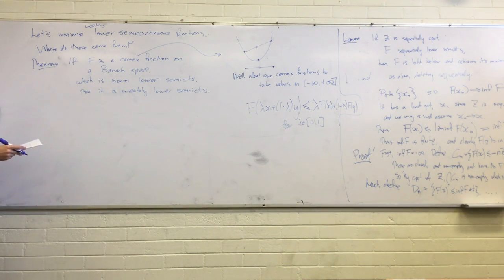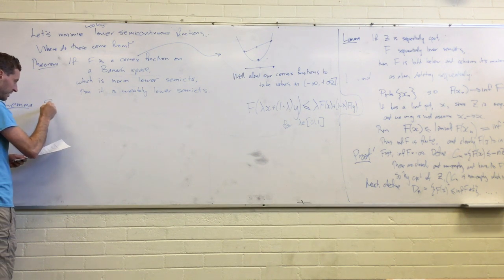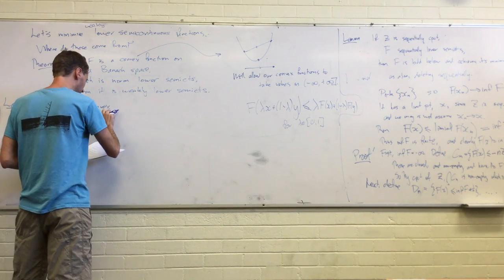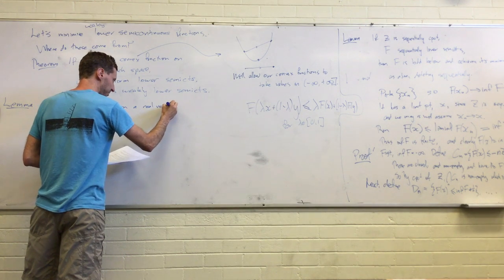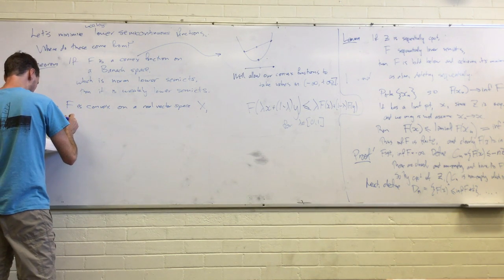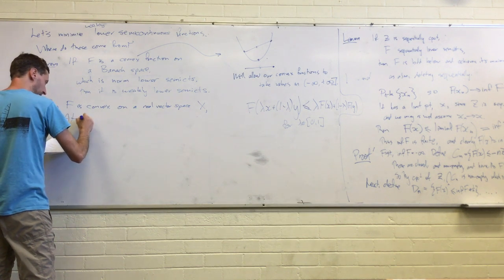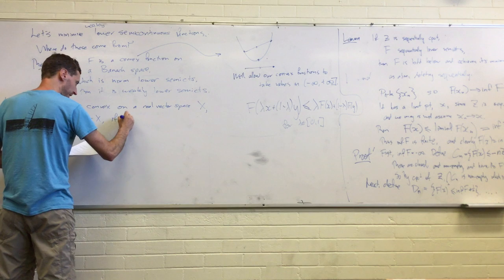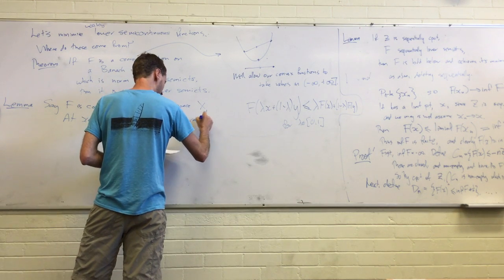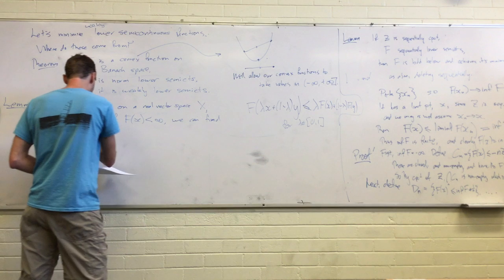Okay. So, this theorem needs a few lemmas to make it work. So, first of all, I think we're not going to prove it because it's so similar to something we did before. So, to say f is convex on a real vector space X. So then at a point x in X, as long as f(x) is finite, we can find an affine functional.